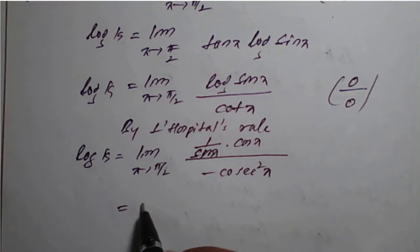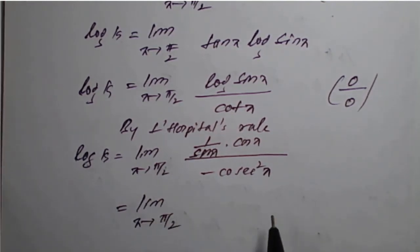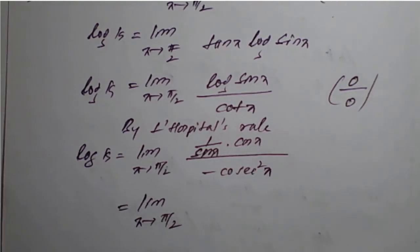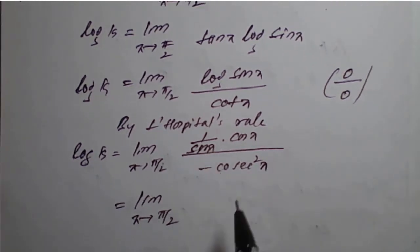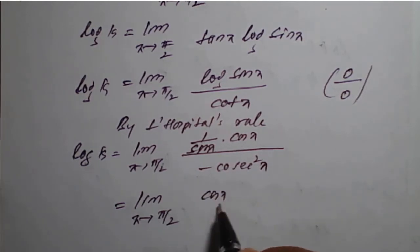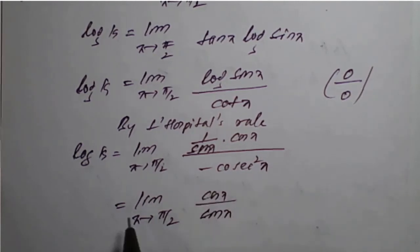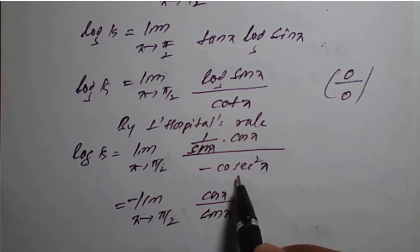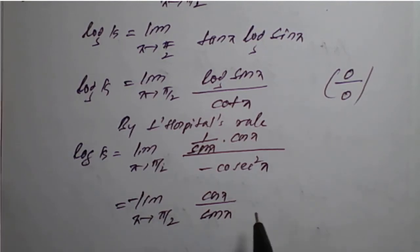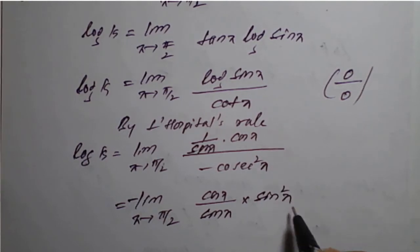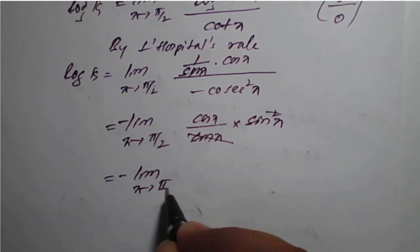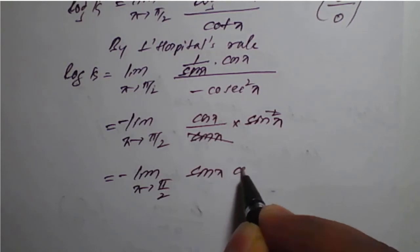Simplifying, the limit as x tends to π/2: writing cos(x)/sin(x) in the numerator and 1/cos²(x) in the denominator — after cancellation of sin terms — we are left with minus the limit as x tends to π/2 of sin(x) times cos(x).